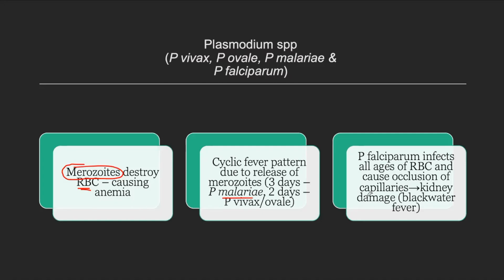Why is there kidney damage in malaria? It is because the RBCs cause occlusion of the renal capillaries, leading to blackwater fever. Be careful, because blackwater fever — aside from renal damage — can also present with disseminated intravascular coagulation, or DIC. Of the four species, falciparum — letter F for 'fatay' (Filipino for dead) — has the highest mortality. It is the deadliest.